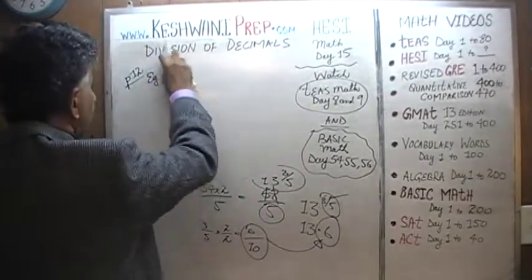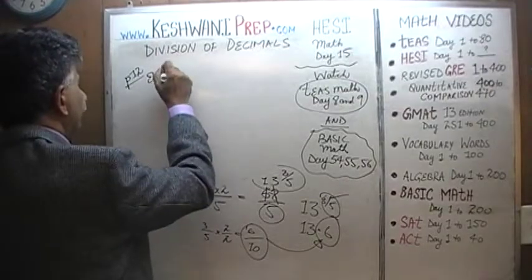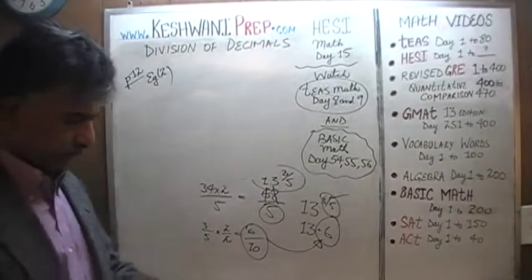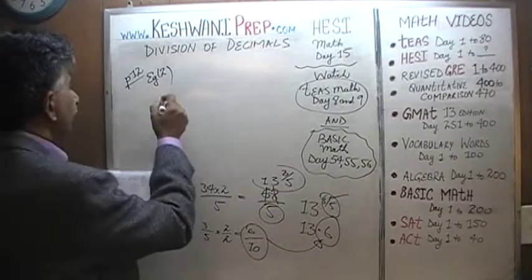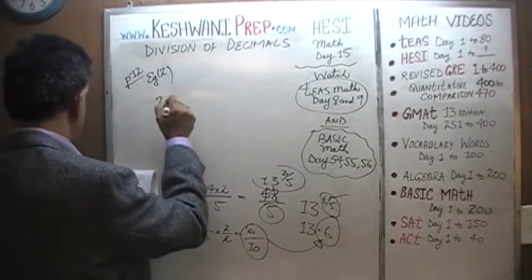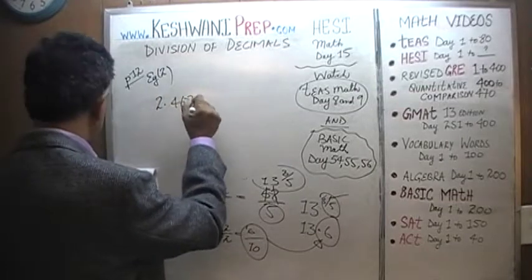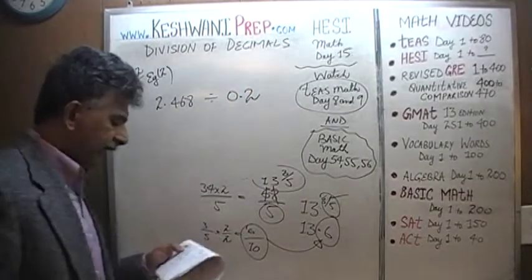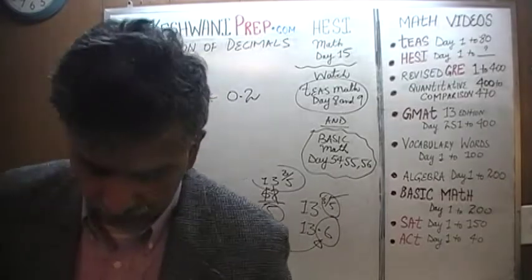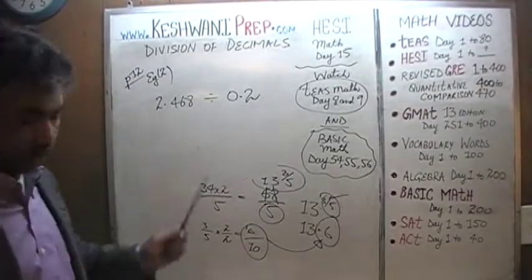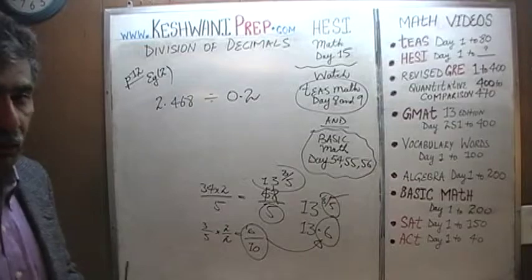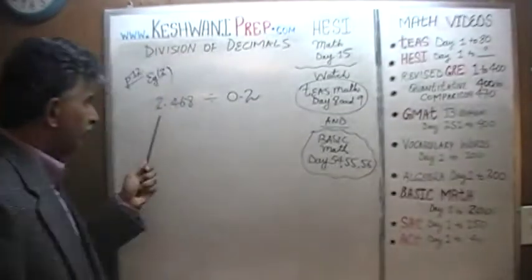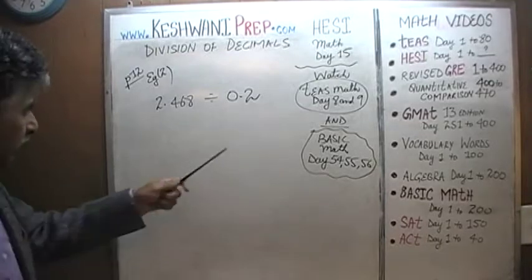Let's do the next one. Example number 2: 2.468 divided by 0.2. The idea again is to understand how to write the decimals given to us as fractions using whole numbers. We are going to do them individually so we understand it properly, and then we will put them together.